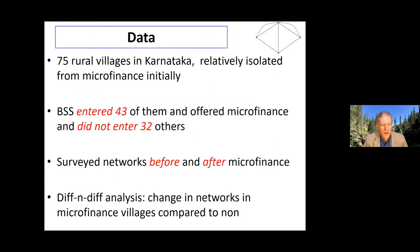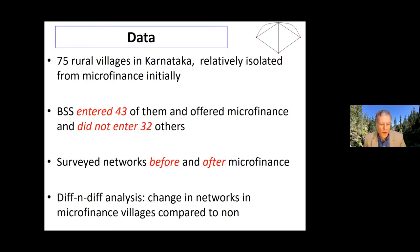There were 75 rural villages, all in Karnataka, relatively isolated from microfinance initially. A key point for the second part of this presentation is that the bank entered 43 of these villages and did not enter the other 32. Eventually we'll be able to see how the presence of these loans affects the social structures inside these villages. We measured the networks in the villages before they entered and then again after they entered, and we'll look at how the presence of the bank affected the changes in the network structures.